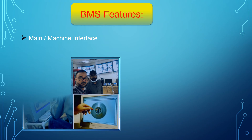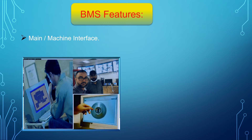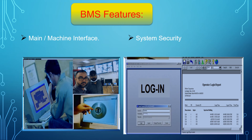In this slide we are going to discuss BMS features. The main machine interface interacts with connected technical building equipment and is user-friendly for operators, engineers, and building managers. In terms of system security, the BMS includes features to prevent unauthorized use, such as password protection, operator-specific access, and operator log summaries.